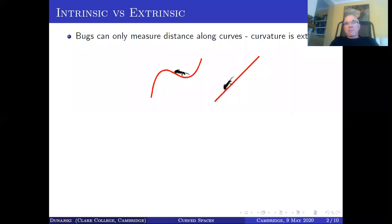We'll start off by thinking of curves. So imagine a civilization of intelligent bugs which inhabit a one-dimensional universe like this red curve on the left. The bugs, let's imagine, know a lot of mathematics and they can measure distance.